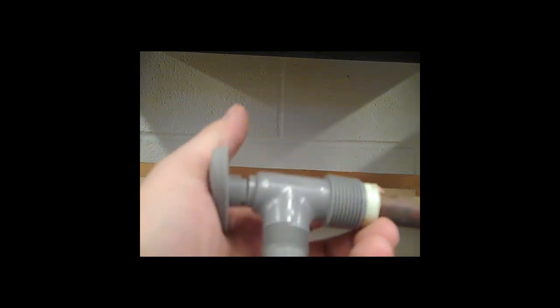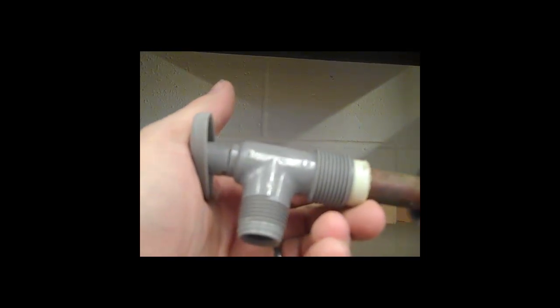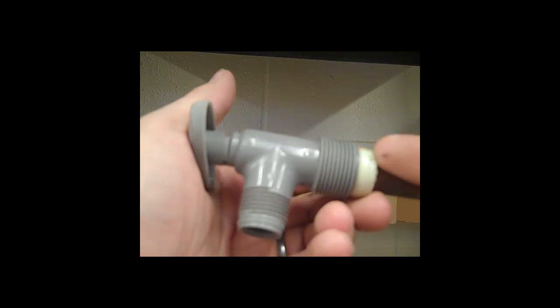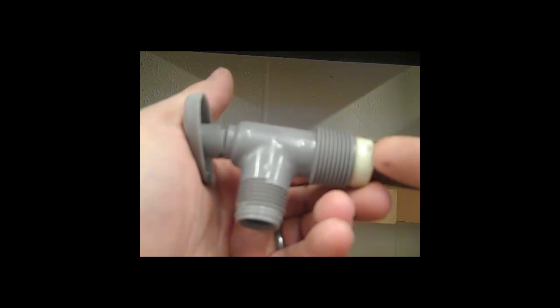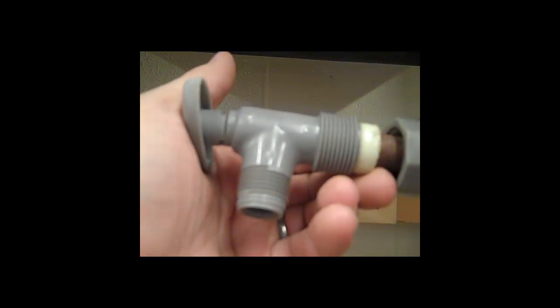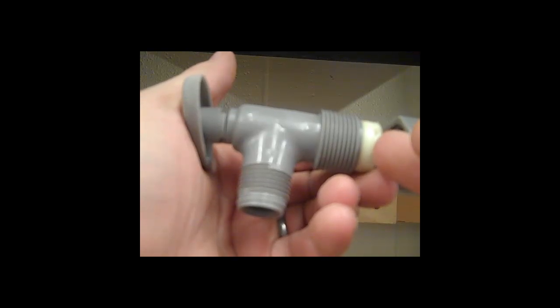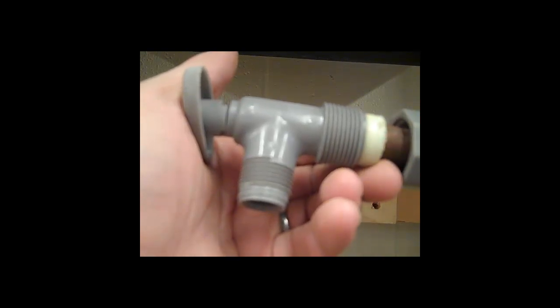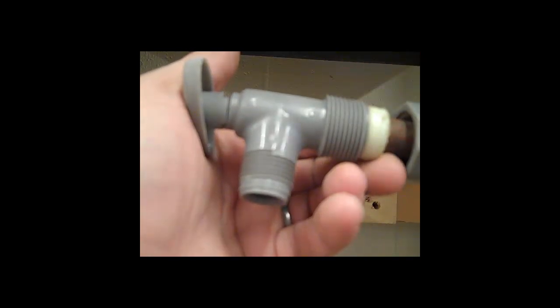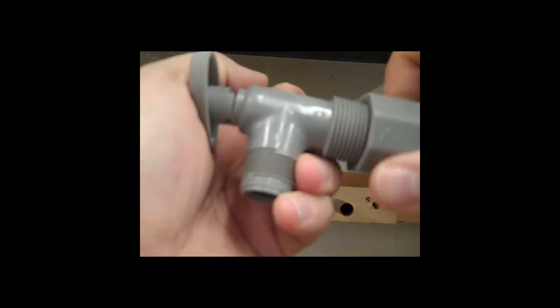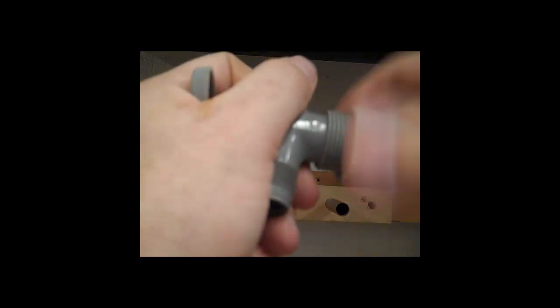When those two match it creates a watertight seal, so these two tapers match up together. The nut comes through and it has a shoulder on the back side of this ring. As this nut is tightened it's going to squash this white piece and create the watertight seal around the pipe and to the valve itself. So you bring that forward and then you can tighten that up.